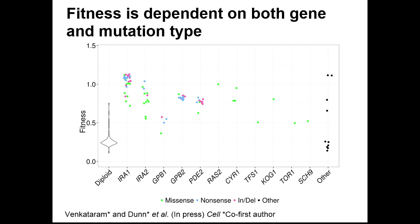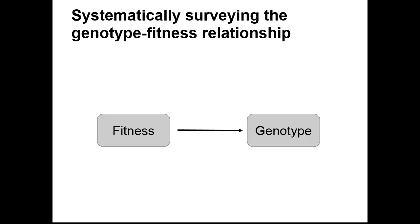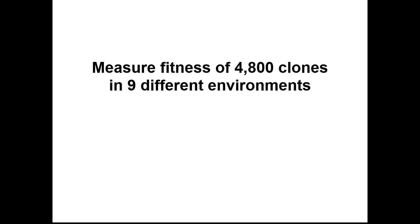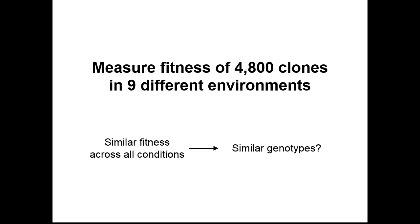Despite the apparent simplicity of the genetic basis of adaptation, there are quantitative fitness differences. Overall, these two classes explain the fitness effects of 95% of the sequenced clones. There are only 14 clones known to be adaptive that don't have mutations in one of these two classes, but since we know they are adaptive, we can go back in future work to identify what is actually going on in them. We can also study this genotype-fitness relationship in the other direction, asking whether clones with similar fitness effects have similar genetic bases of adaptation — potentially revealing whether mutations in different genes have similar physiological effects. However, with a single fitness estimate in a single environment we lack power, so we measured fitness of all 4,800 clones in nine different conditions.